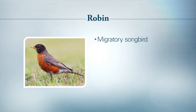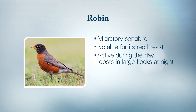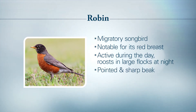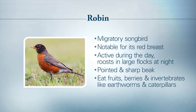The robin is a migratory songbird, most notably recognized by its reddish-orange breast. It is mostly active during the day and roosts in large flocks at night. The robin's beak usually has some yellow on it — it's longer than the dove's beak but very pointed and sharp. Robins eat fruits, berries, and invertebrates like earthworms and caterpillars.